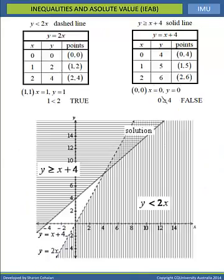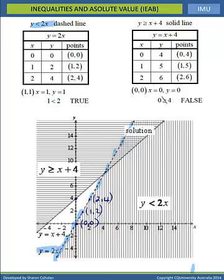So the solution will look like this. Looking at the first inequality, y is less than 2x: we plot the points 0, 0 and 1, 2 and 2, 4, label your points, and draw a dashed line through them. Label your line. We then looked at the point 1, 1, which is in the region that was true, so we shade all of that area. This shaded region is y is less than 2x.